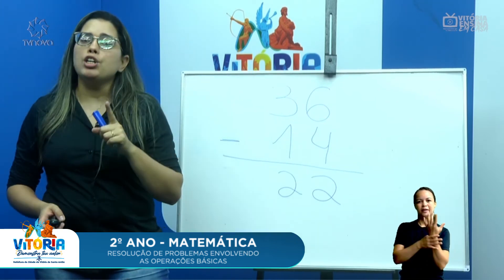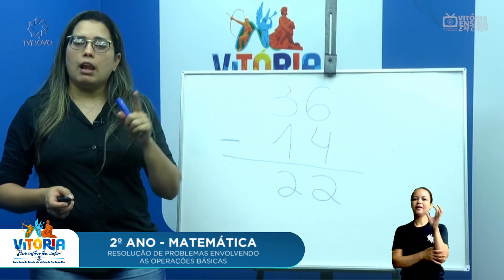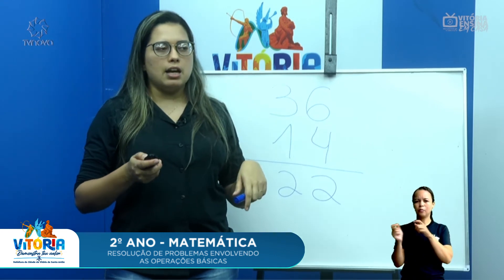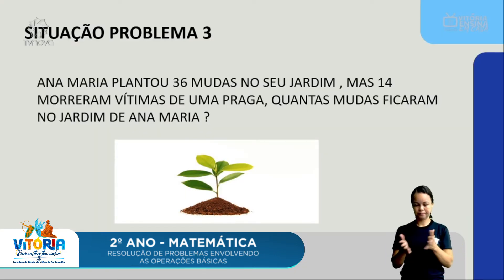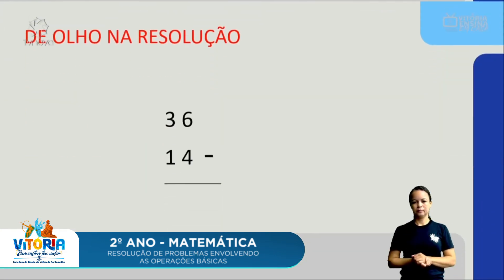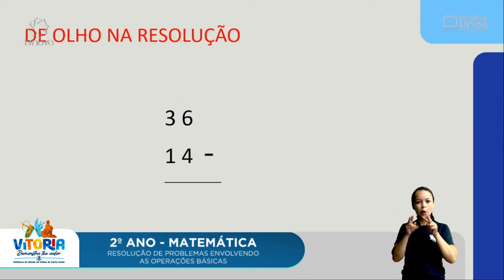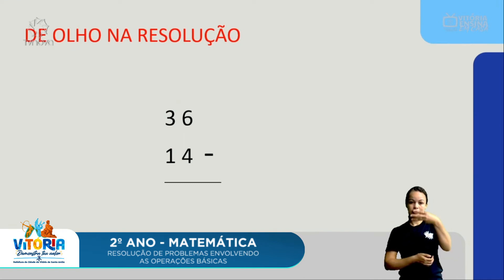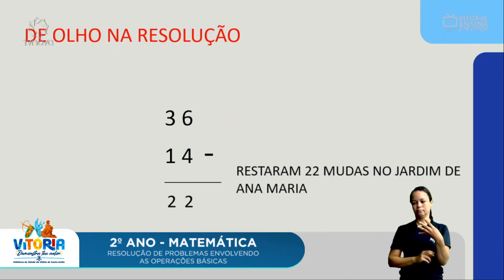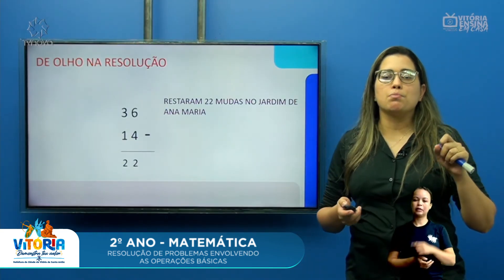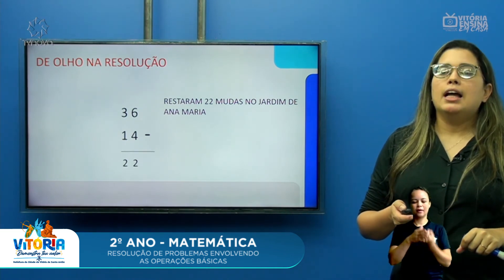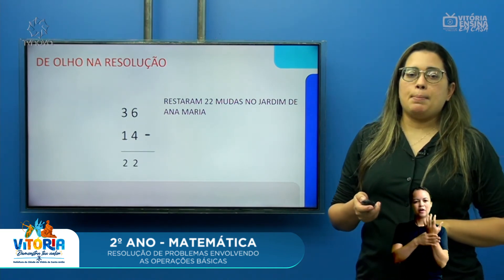Vamos corrigir no slide para saber se acertamos. Olha: 36 menos 14, igual a 22. Restam 22 mudas vivinhas na casa de Ana Maria.